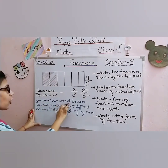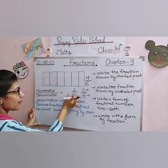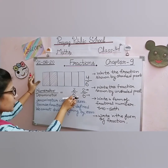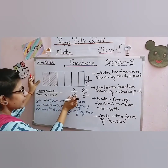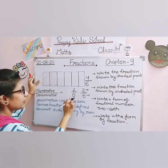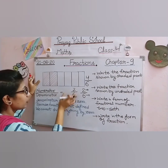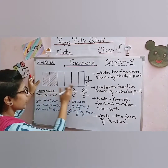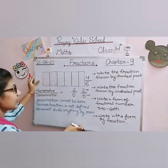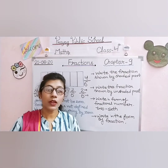Now an important basic point: the denominator cannot be zero. If the denominator is zero, the fraction is not defined, because we cannot divide anything by zero. The denominator represents the total number of parts in the figure — we counted one, two, three, four, five, six parts, so we wrote six. If the denominator were zero, it would mean the figure doesn't exist and has no equal parts. Therefore, the denominator is never zero.